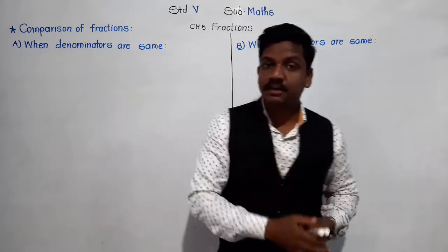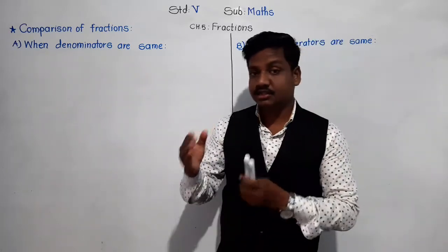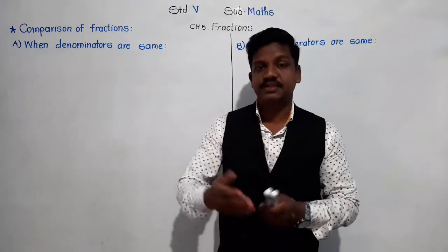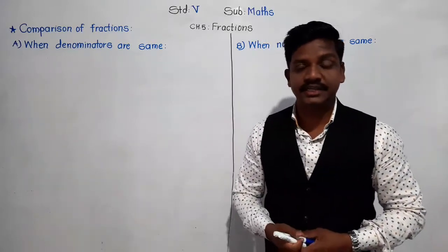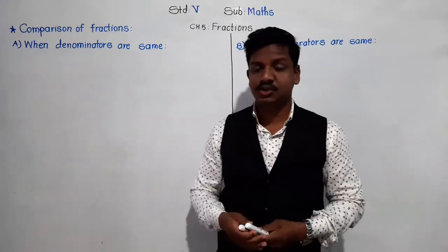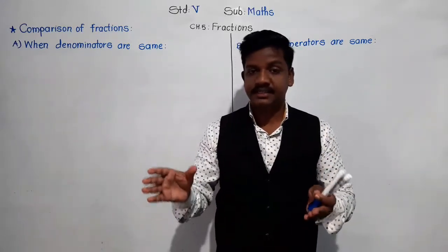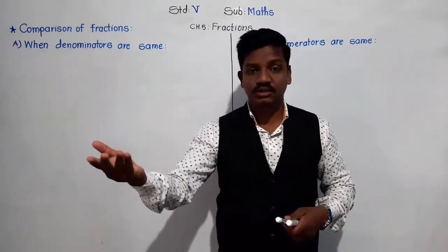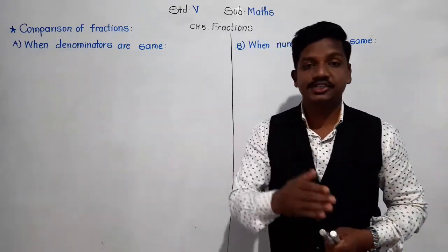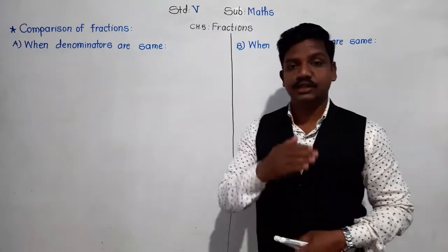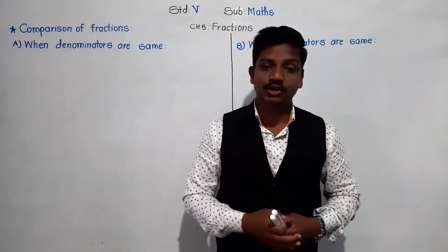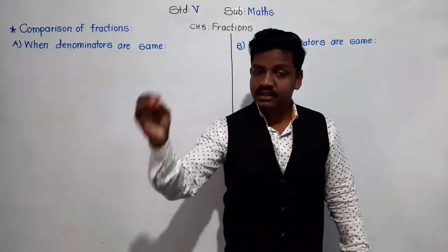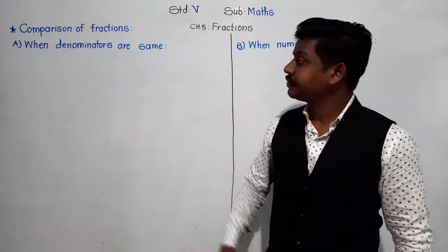When we learn numbers, we learn to compare different numbers — numbers of 7-digit, 8-digit, or 9-digit. Comparison means deciding or determining which numbers are greater or which are smaller, or arranging numbers into ascending and descending order. That was comparison of our normal numbers.